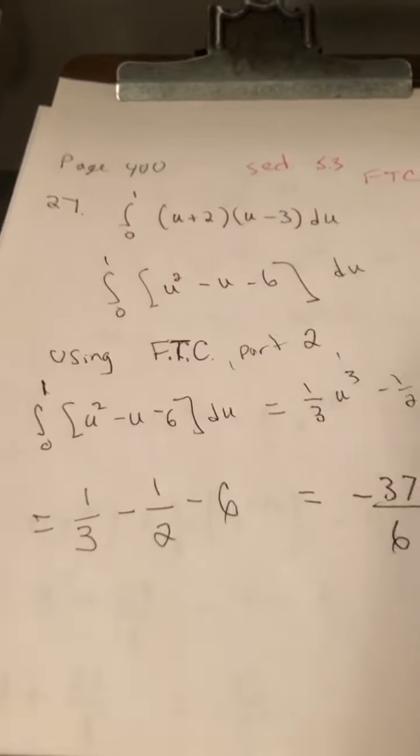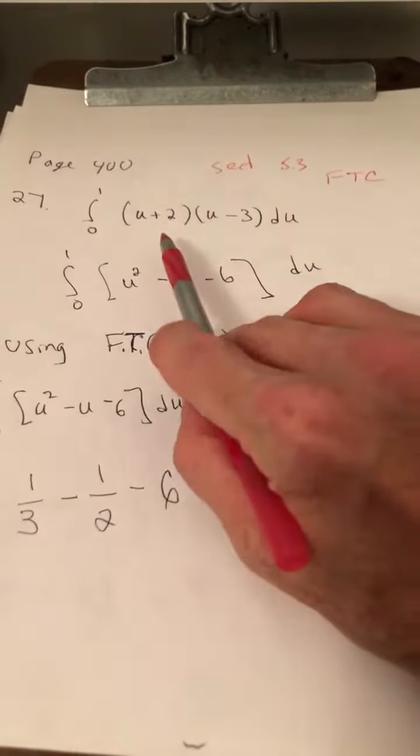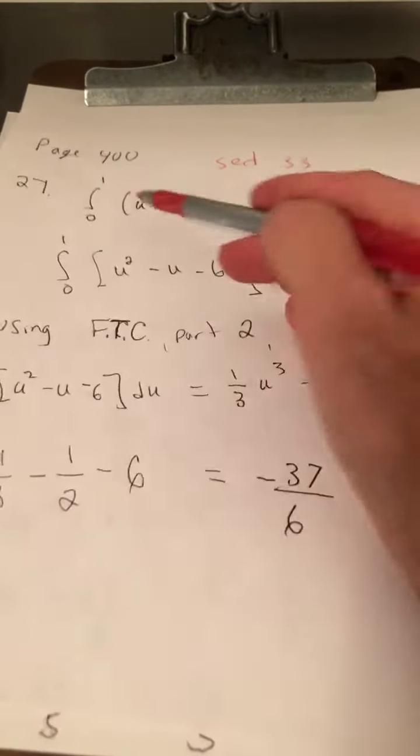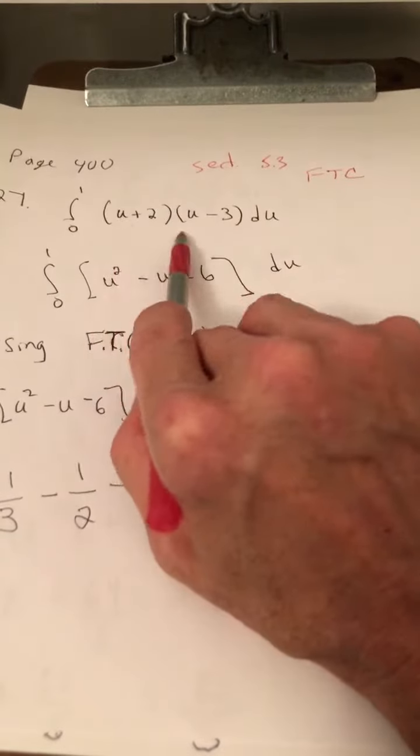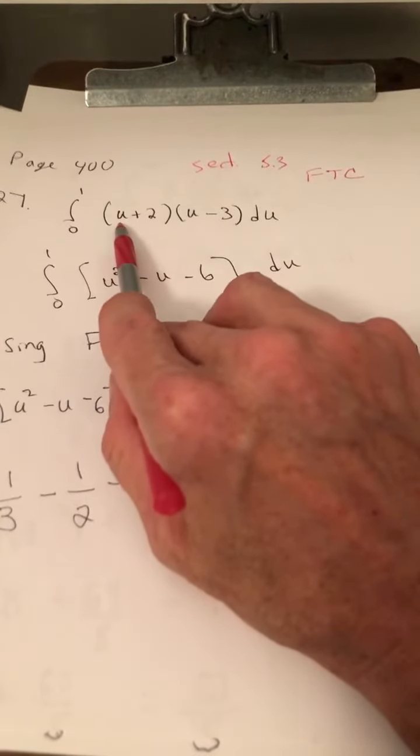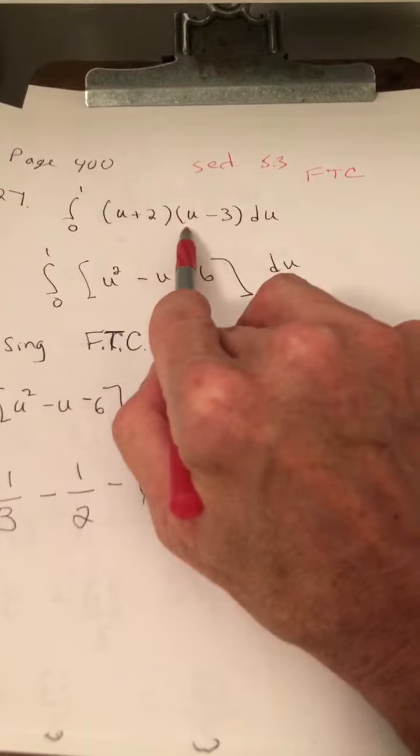As an example, let's look at number 27. Here's our integral. It's the integral from 0 to 1. These are our limits of integration. Our function is u plus 2 times u minus 3.